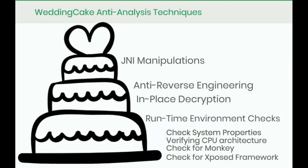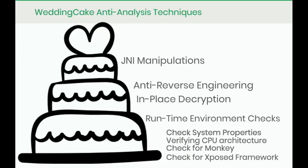What makes Wedding Cake so interesting? Previously in Android, if someone was going to implement anti-analysis or anti-debugging techniques, they were usually still in Java, because that's what malware developers were already using. So the first notable thing was that all of this is in native code. We're going to start with some JNI or Java Native Interface manipulations, then go into anti-reversing techniques, in-place decryption, and finally about 40 different runtime environment checks. None of these in and of themselves are super novel, but the fact that they embedded each one in each other is what made it so complex and difficult to signature, reverse, and understand.